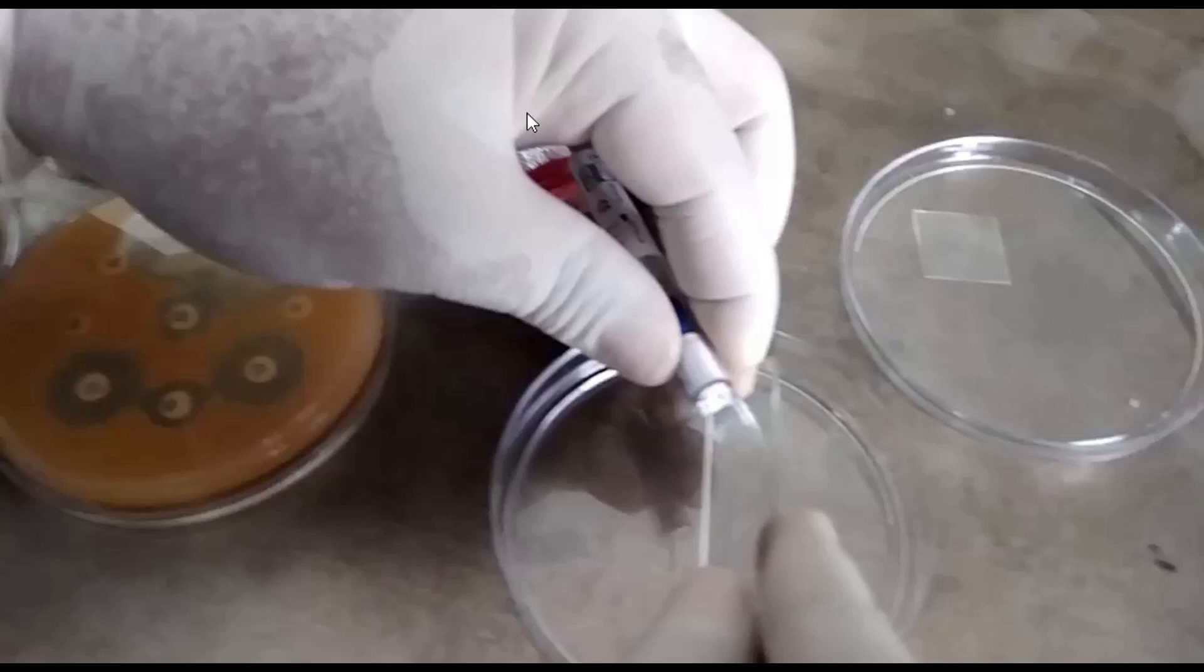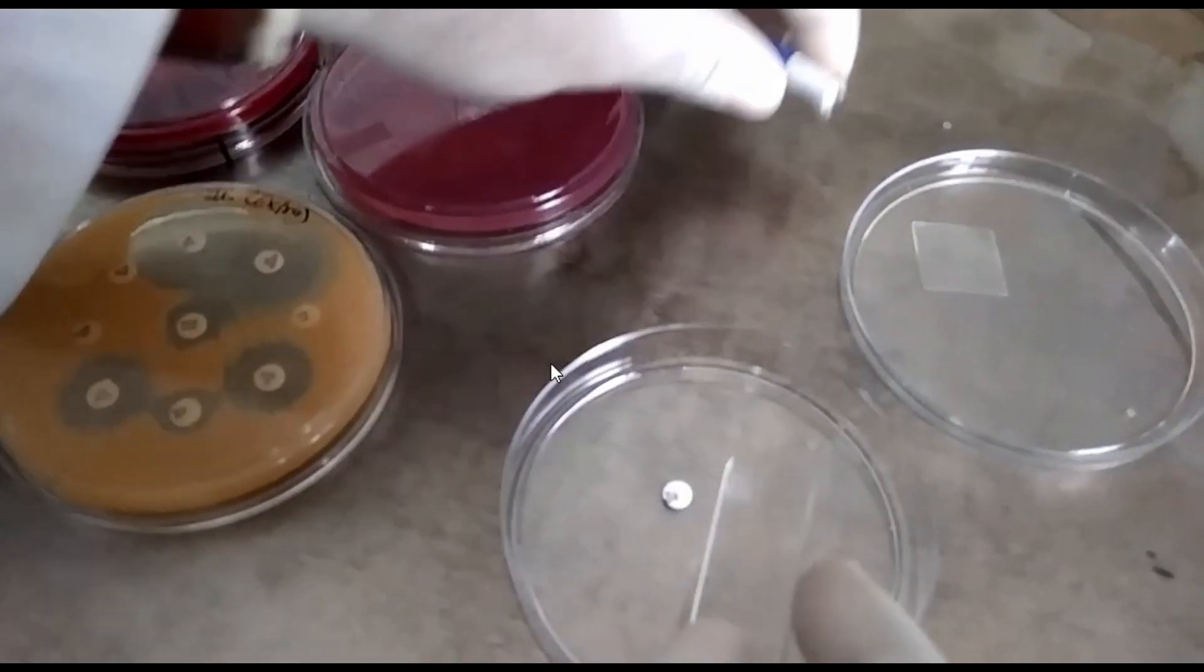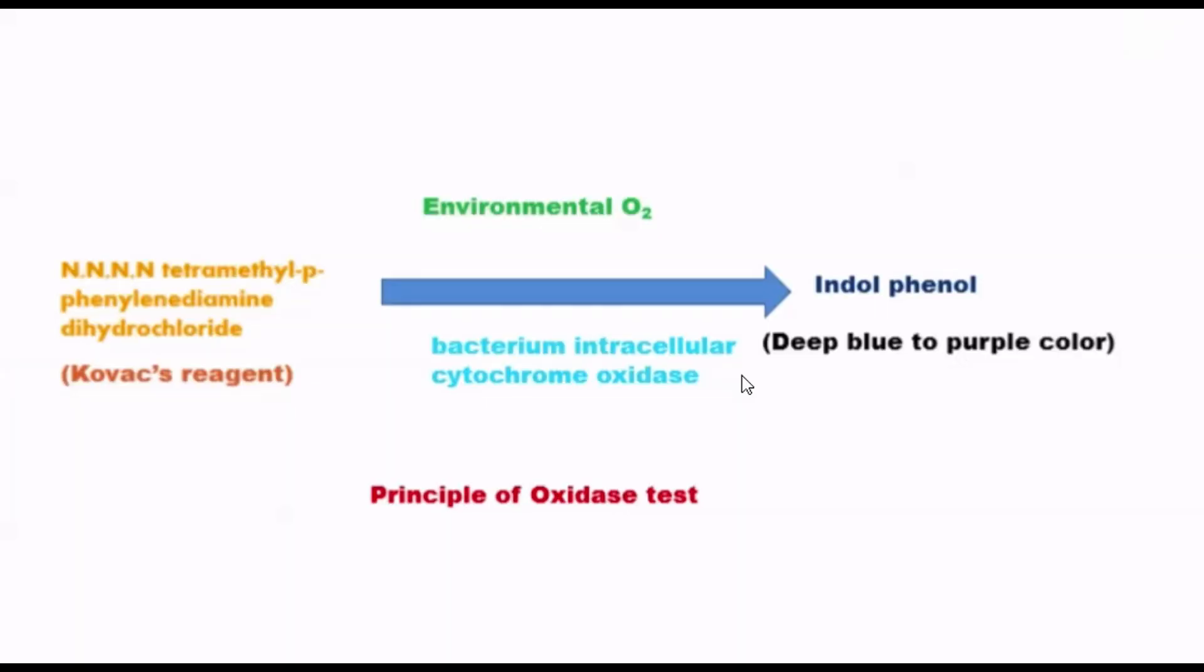Hi, let's know about oxidase test. It is used to assist in the identification of Pseudomonas, Aeromonas, Vibrio, Brucella, Haemophilus, Alcaligenes, Neisseria and Pasteurella species, all of which produce the enzyme cytochrome oxidase. So this is the oxidase disc.